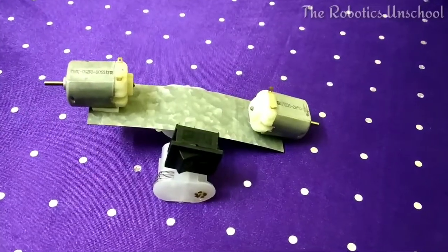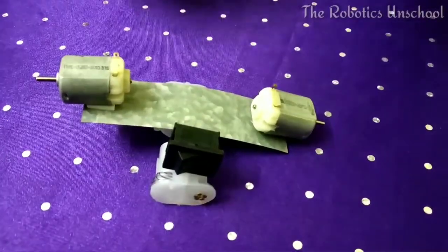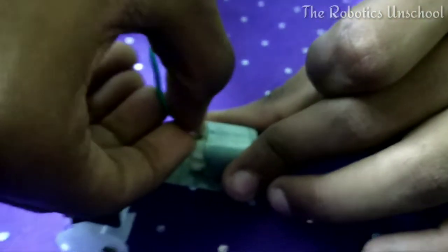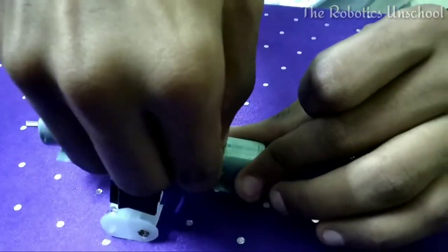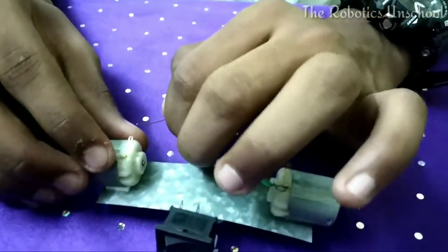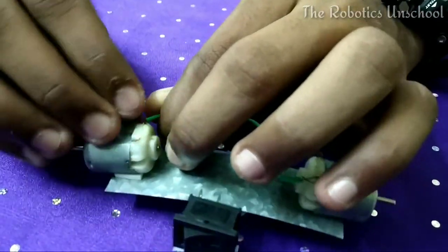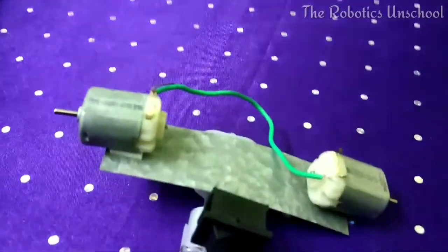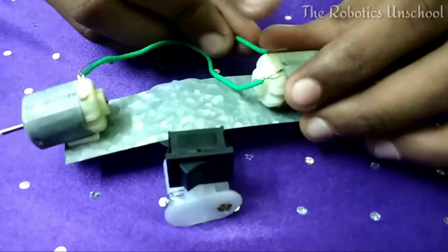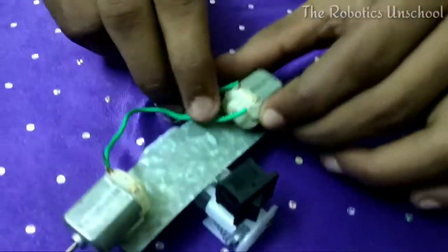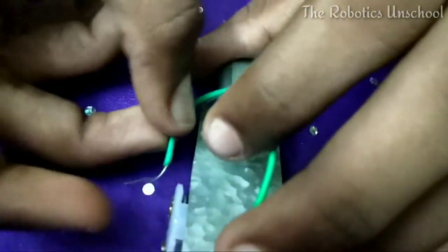Before connecting the battery let we connect wires. Take a wire and connect it. And connect another side of the wire in the opposite side of the motor. And take another wire, like this. Connect it to the negative.